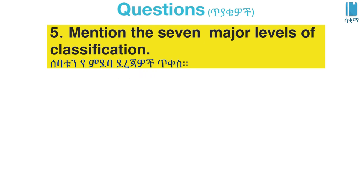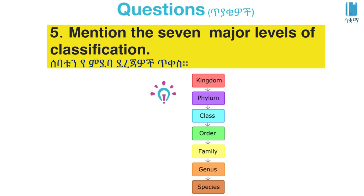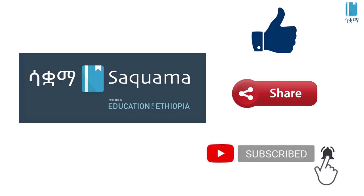To recap, the levels of classification are: Kingdom, Phylum, Class, Order, Family, Genus, Species. If you like this video, please like, share, and subscribe.